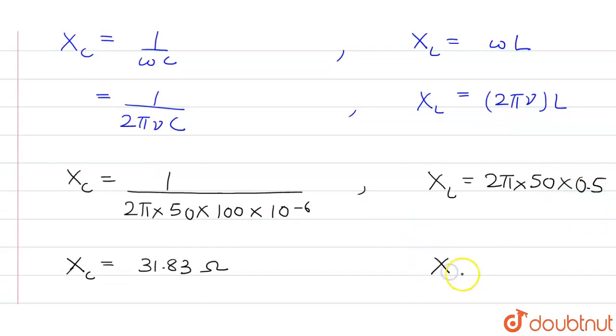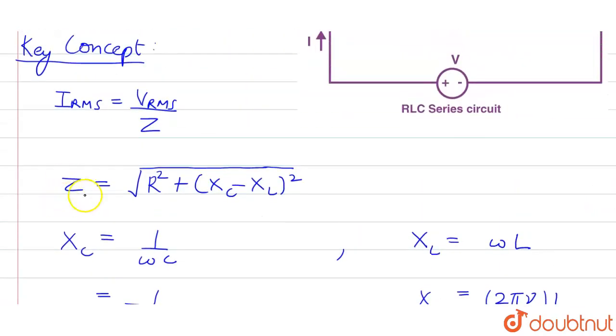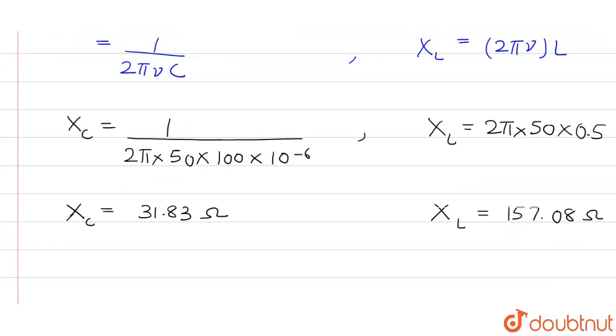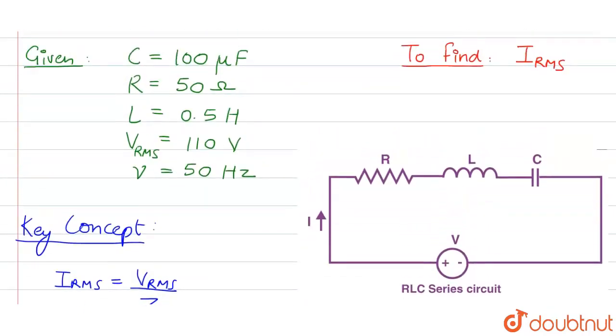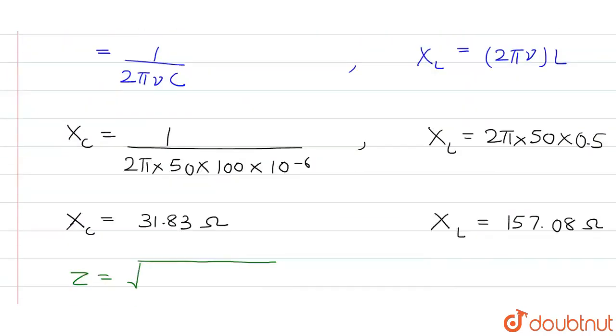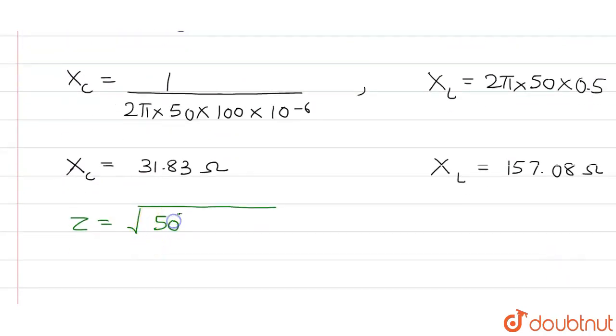Now we will find impedance. So impedance Z is given as under root of R². R is given as 50 so it will be 50 square...